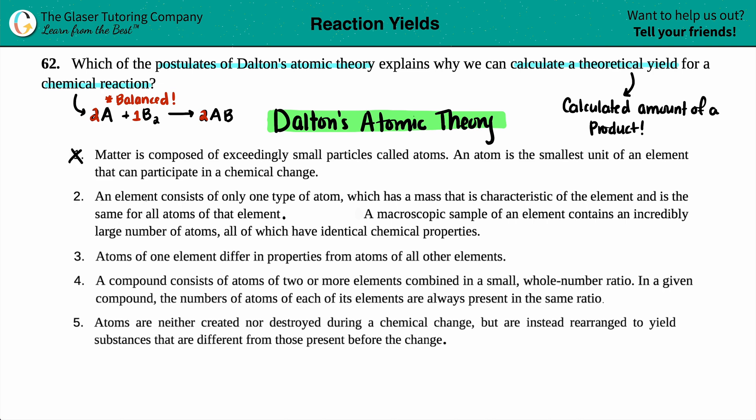Number two, an element consists of only one type of atom, which has a mass that is characteristic of an element and is the same for all atoms of that element. A macroscopic sample of an element contains an incredibly large number of atoms, all of which have identical chemical properties.